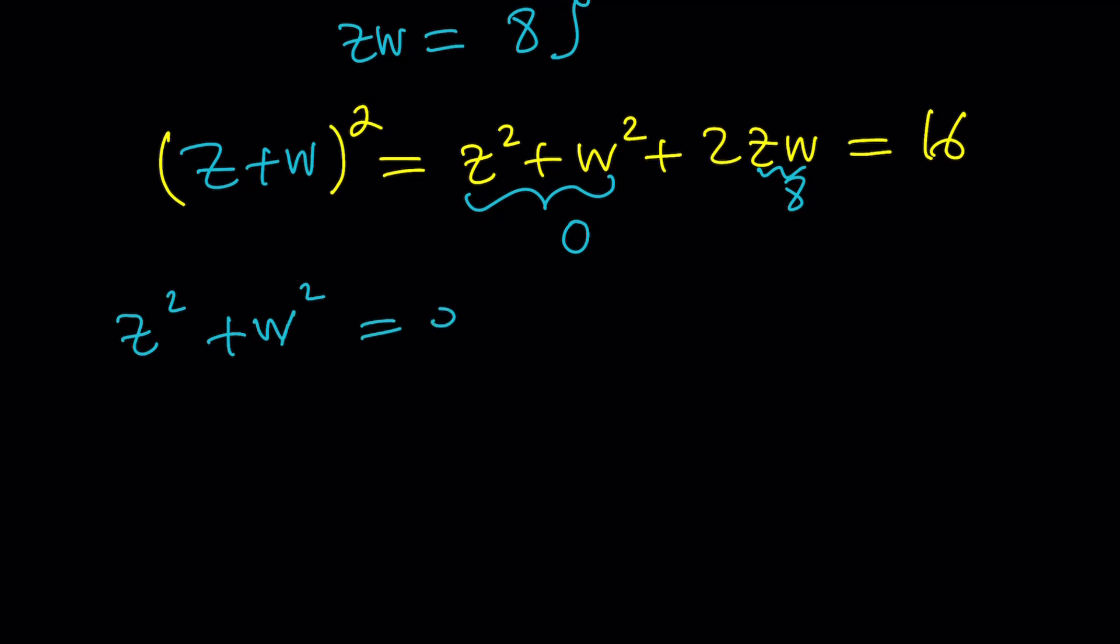Now in the real world this would mean that z and w are both 0. Because otherwise you cannot get 0 by adding two perfect squares. Because one of them has to be negative and that's not possible in the real world. But in the complex world everything is possible, right?